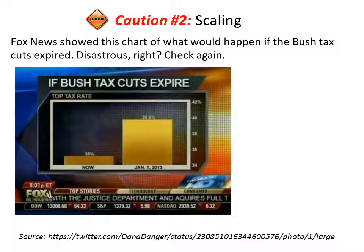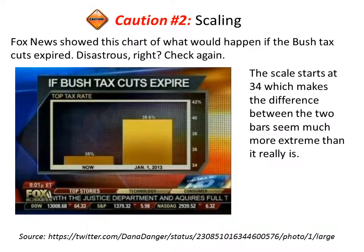Another example: Fox News showed a chart of what would happen if the Bush tax cuts expired — disastrous, right? If you check again, you can see the scale starts at thirty-four, which makes the difference between the two bars seem much more extreme than it really is. If you started the graph at zero, the difference between now and January first, 2013 would actually be pretty insignificant.